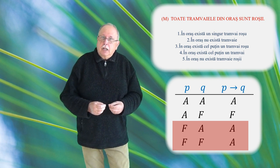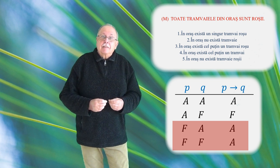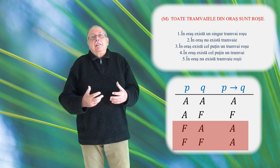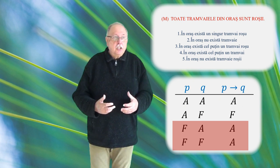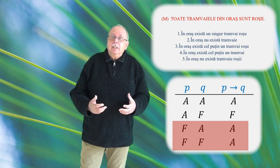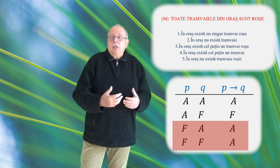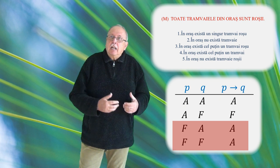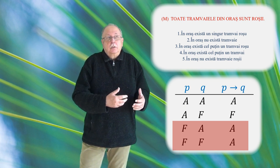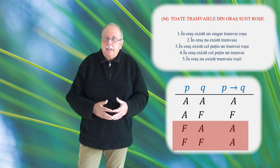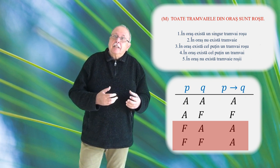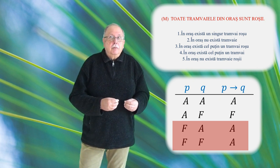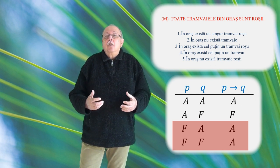dar nu este o minciună. În cazul nostru, asta înseamnă că a spune toate tramvaiele din oraș sunt roșii în situația în care nu există tramvaie în oraș, este o afirmație adevărată. Pentru că a spune toate despre niciunul e fals. Deci am pornit de la o declarație falsă. La fel de adevărat este și că toate tramvaiele din oraș sunt albastre sau oricare altă culoare. Așa că, dacă afirmația 2 este adevărată, adică nu există tramvai în oraș, atunci, logic vorbind, afirmația M nu este o minciună.